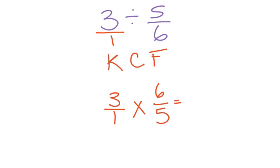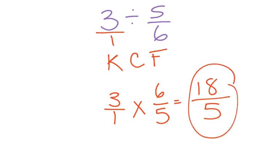Now we have a multiplication problem, and we already know how to solve those. We multiply numerator times numerator, and denominator times denominator. Check if we can simplify, and we can leave that as is, or change it to a mixed number. Let's see, I know that 5 times 3 is 15, so there are going to be 3 wholes. 18 minus 15 leaves me with 3 fifths left over.